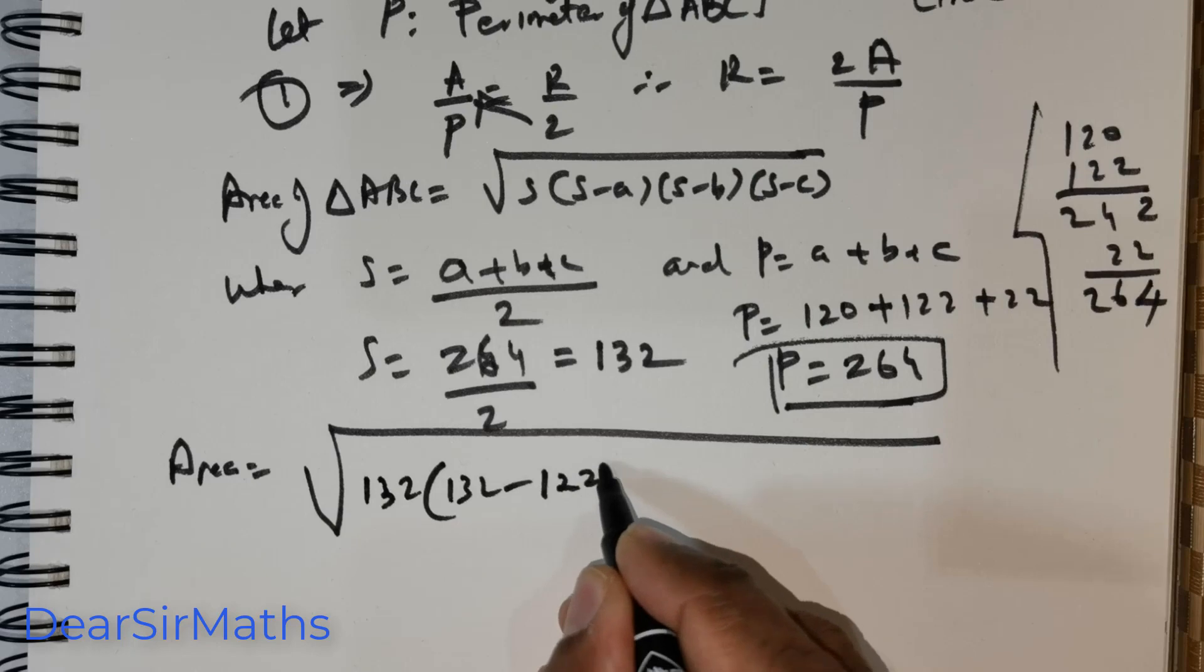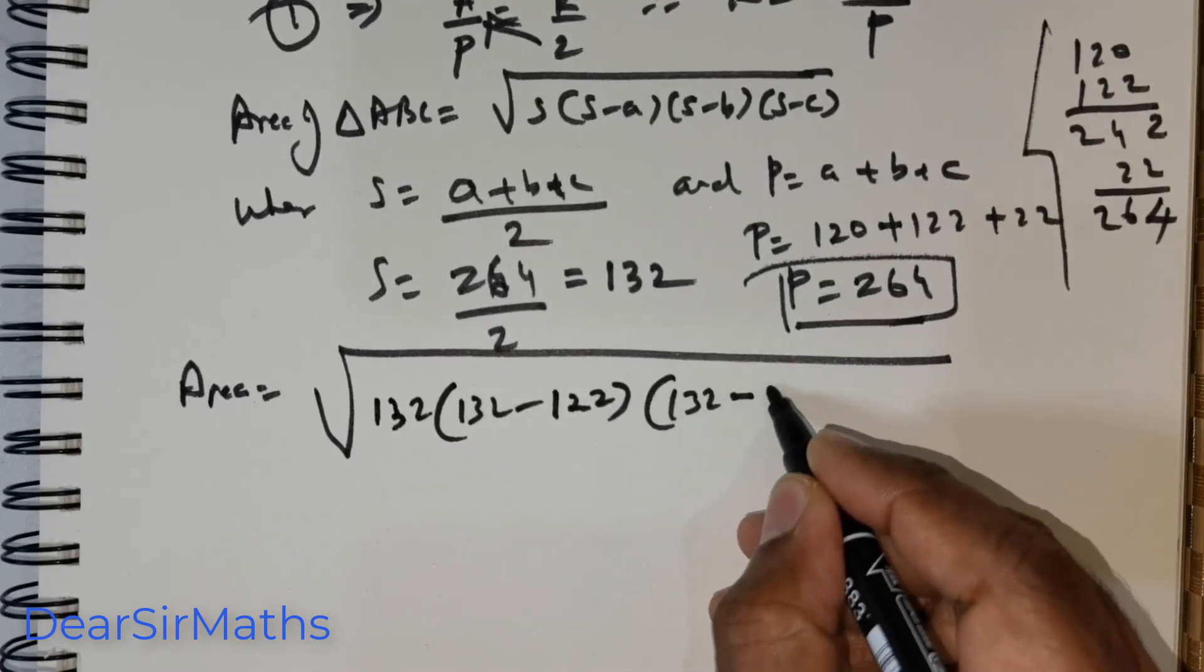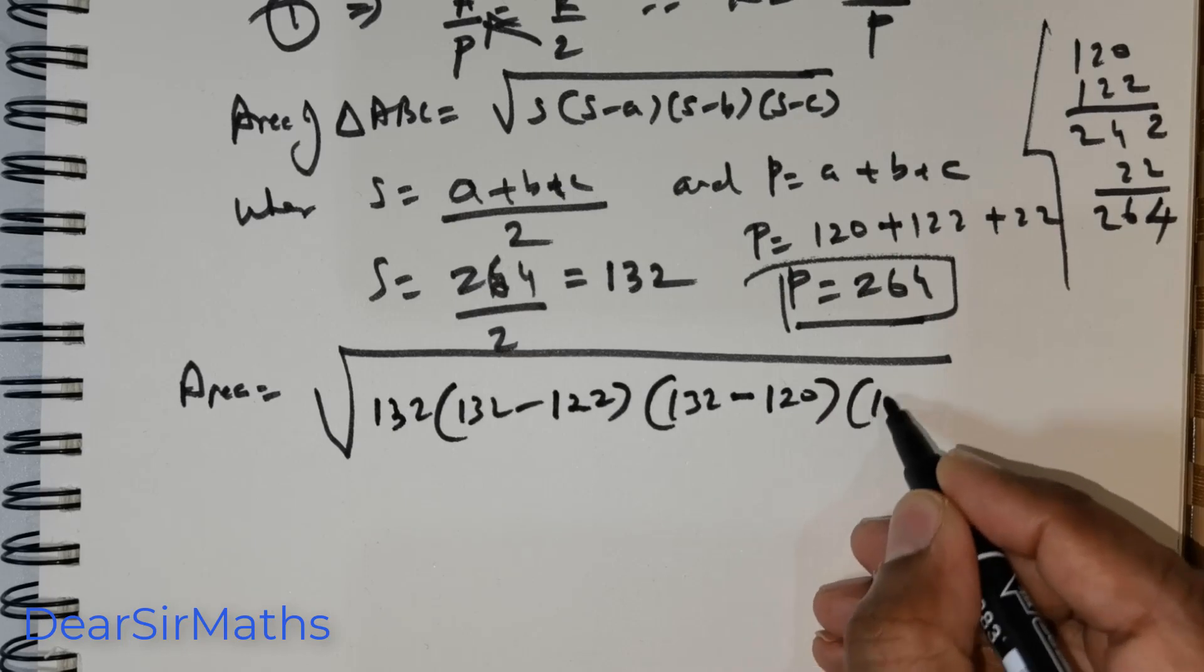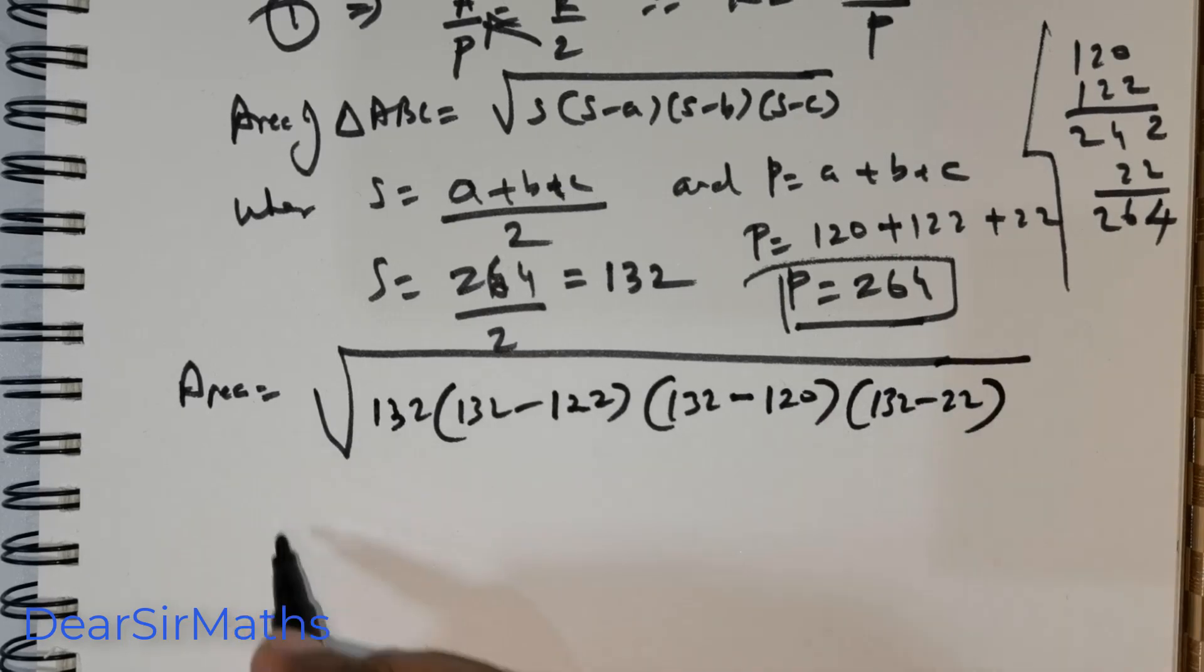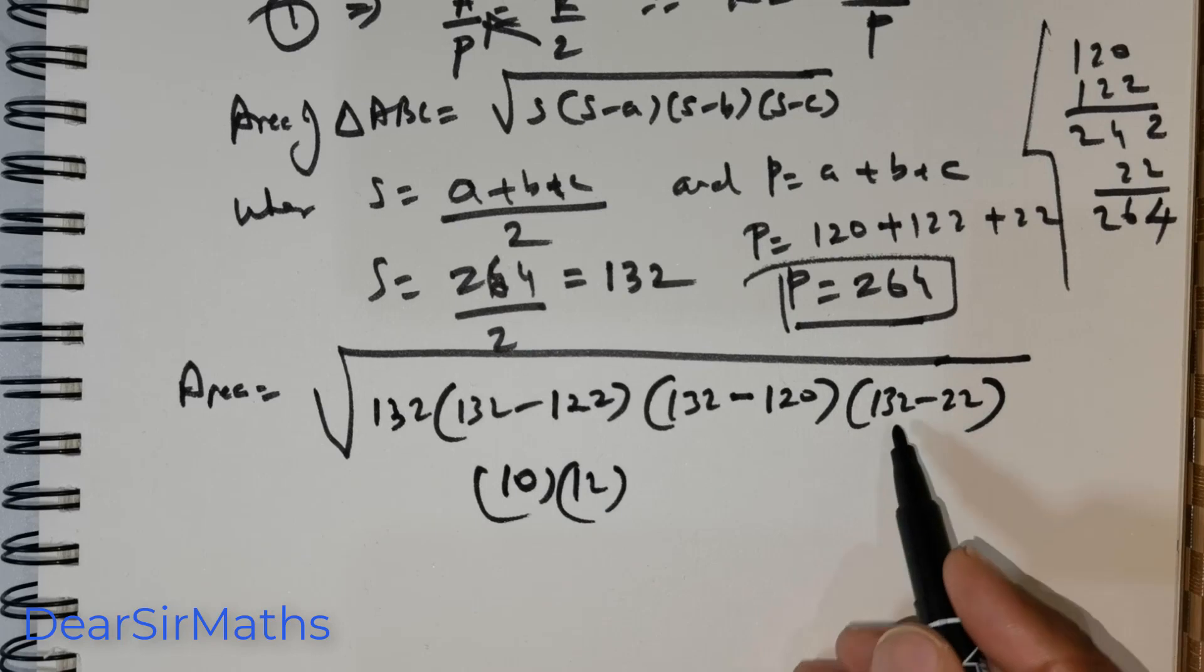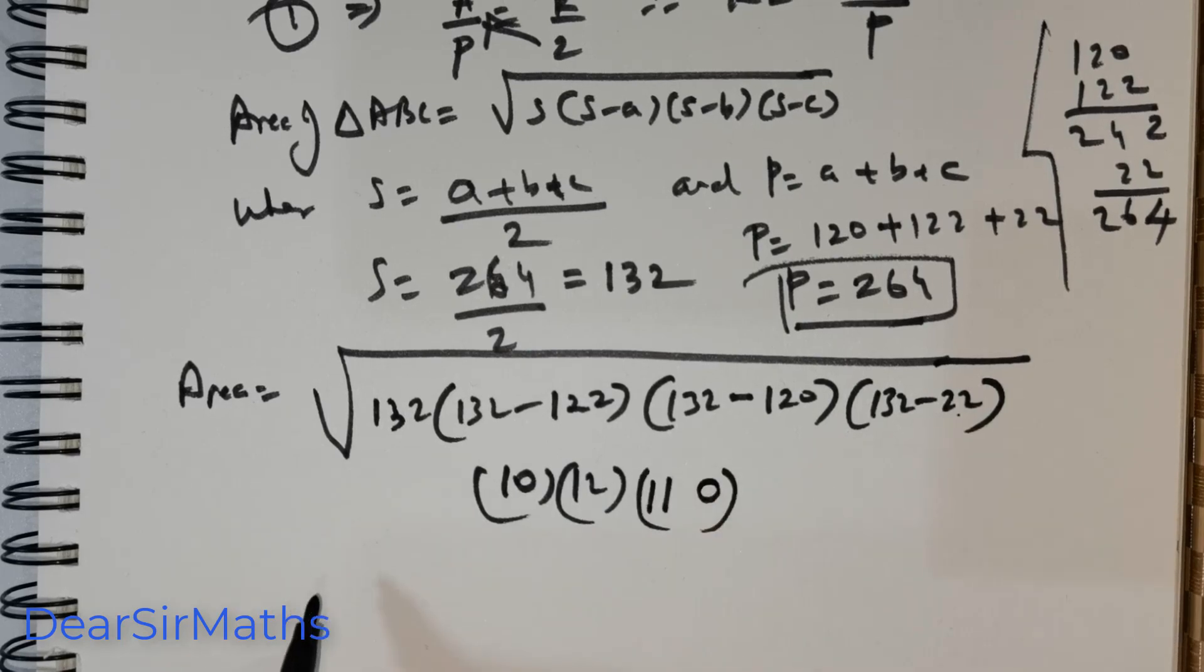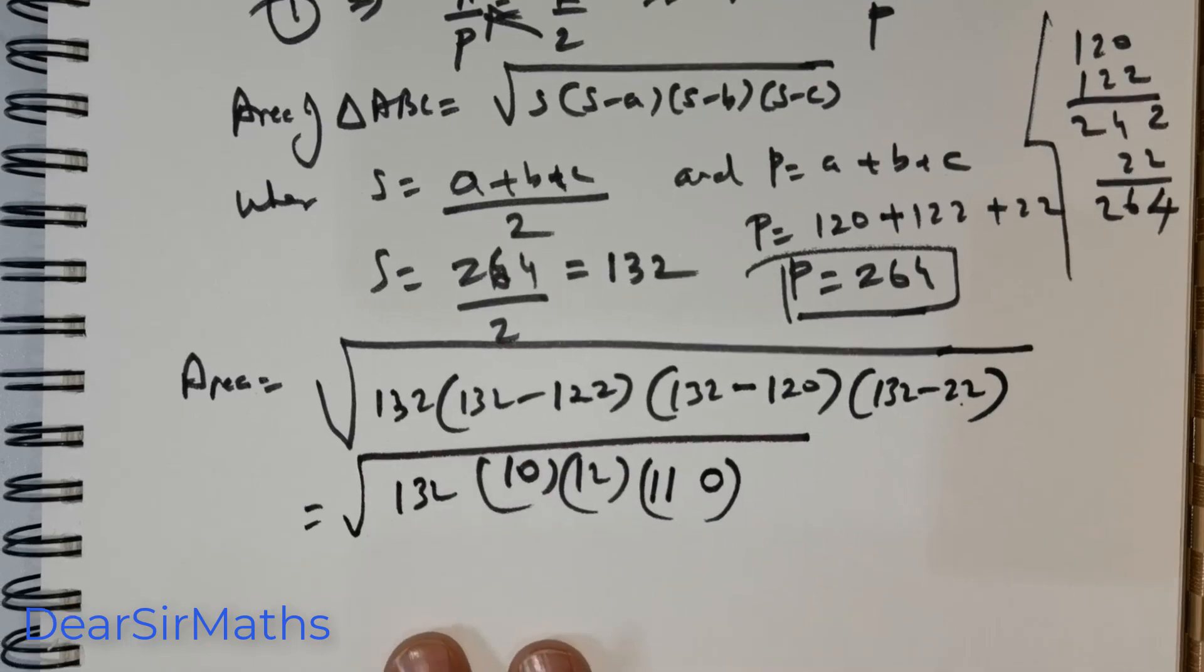So, this is going to be 122 times 132 minus 122 times 132 minus 120 times 132 minus 22. So, we will perform the operation. So, this is going to give me 132 and 132. So, this is equal to root of, this is what I've got.